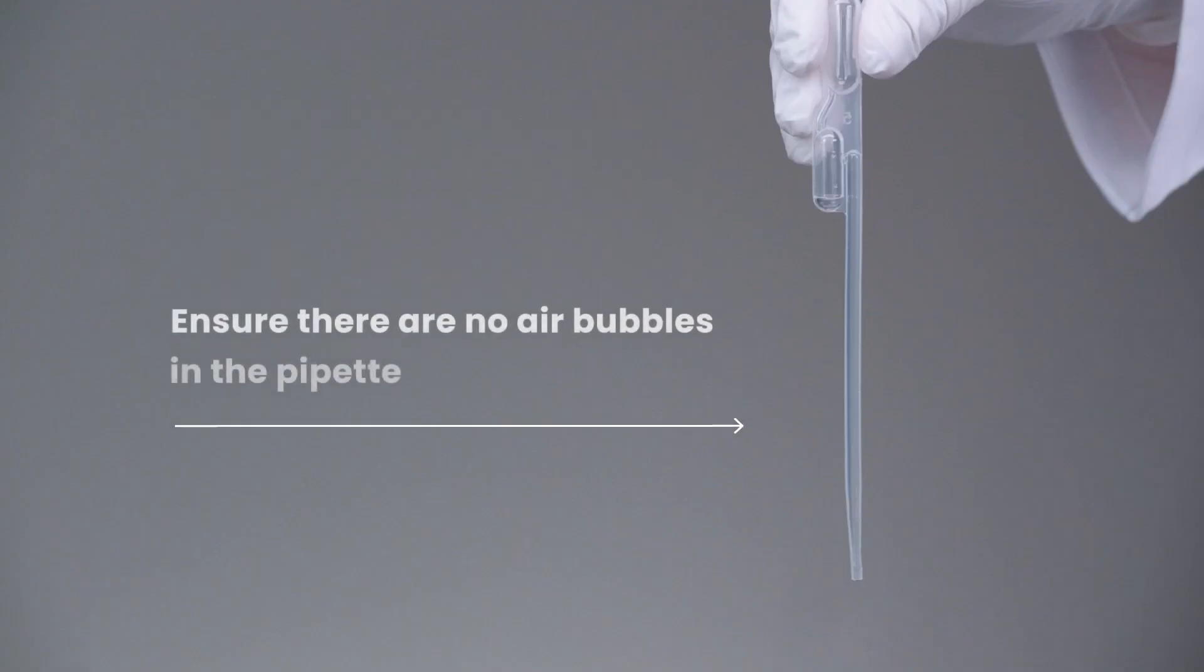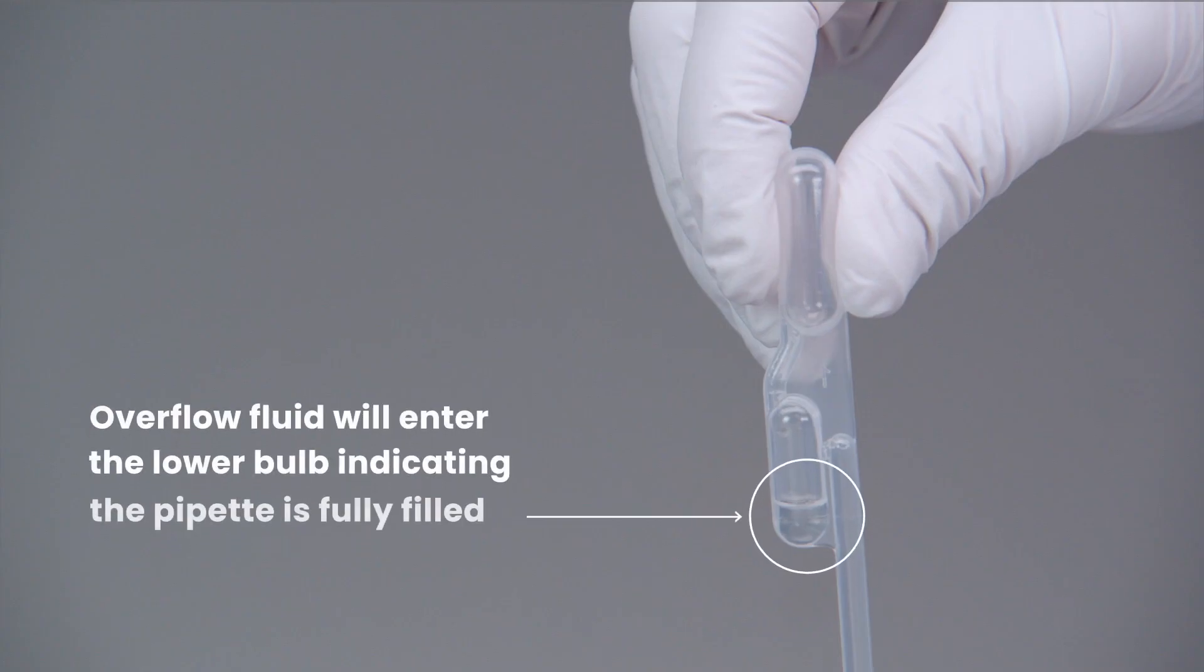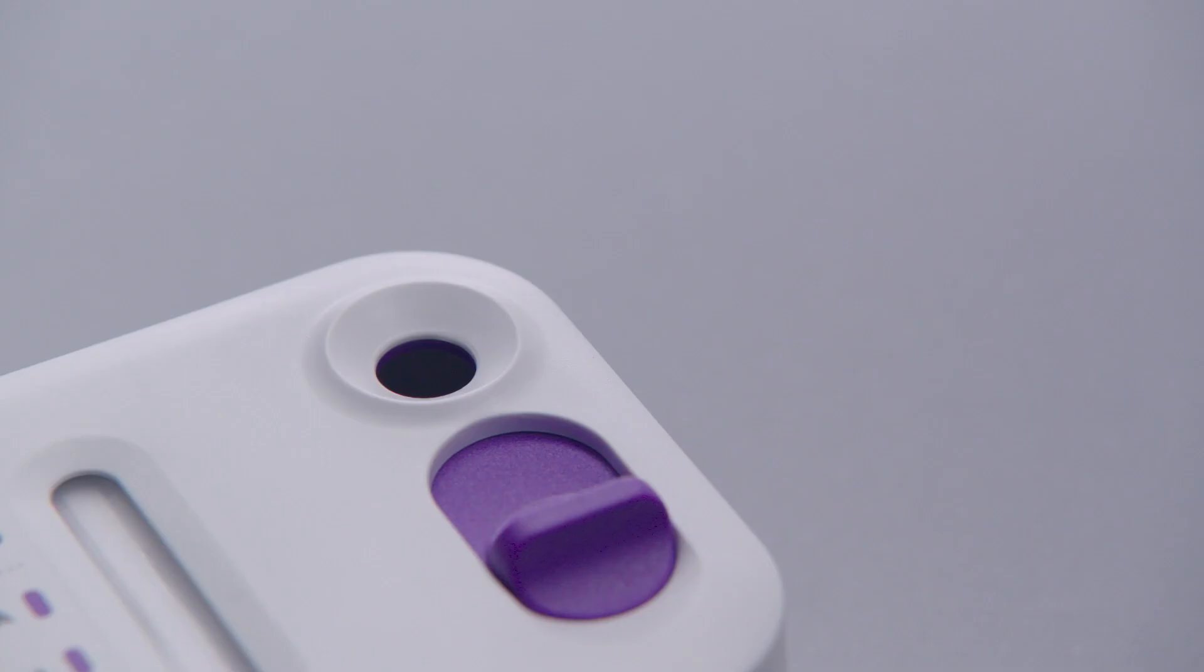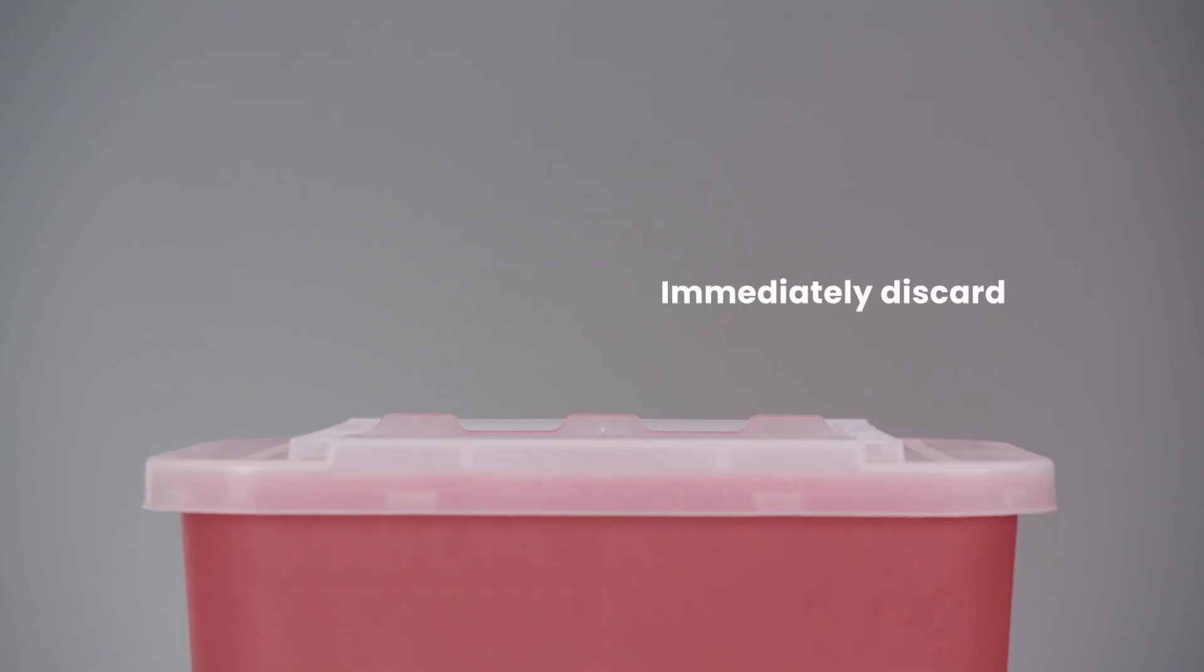Ensure there are no air bubbles. Overflow fluid will enter the lower bulb, indicating the pipette is fully filled. Insert the pipette tip into the sample port and squeeze the upper bulb to add the fluid. Do not set the pipette down. Immediately discard it according to your institution's guidelines.